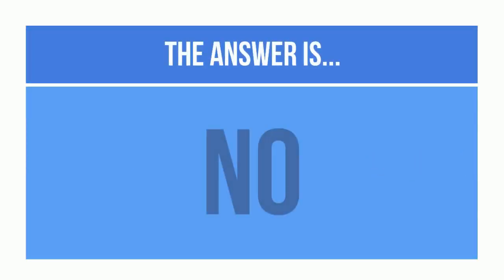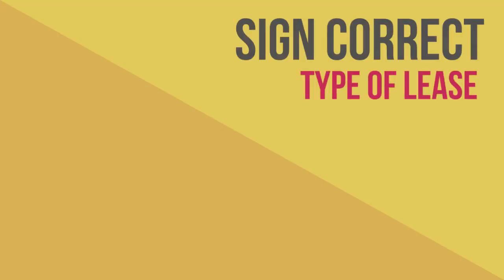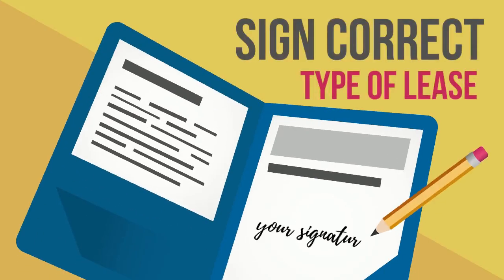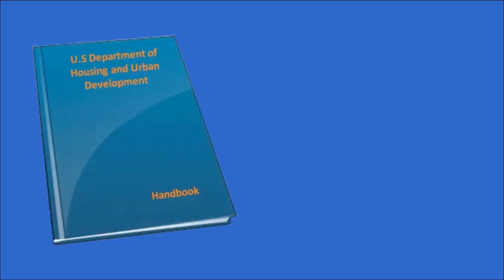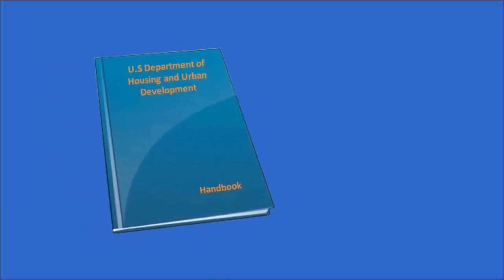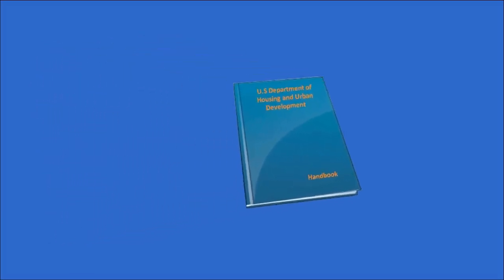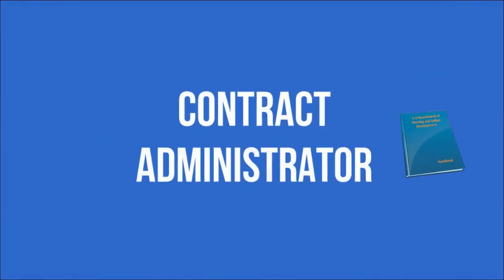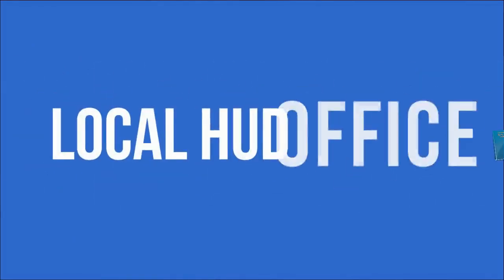You must ask the household to sign the correct type of lease right away. If you have any questions about following HUD's rules on implementing lease changes found in the HUD handbook, contact your contract administrator or local HUD office.